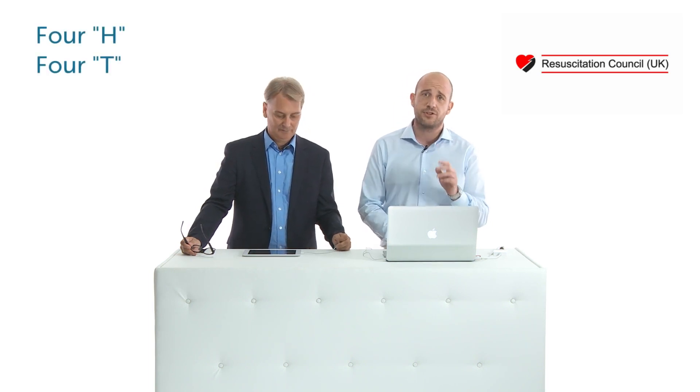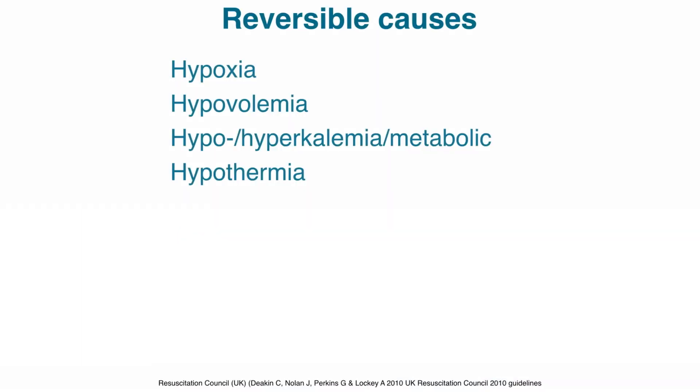According to the UK Resuscitation Council guidelines, the reversible causes of cardiac arrest are the four H's and the four T's. The reversible causes — the four H's — are hypoxia, hypovolemia, hyper/hypokalemia, and hypothermia.